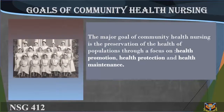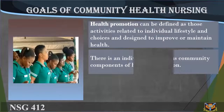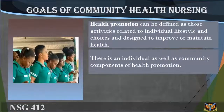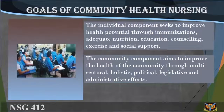The major goal of community health nursing is the preservation of the health of populations through a focus on health promotion, health protection, and health maintenance. Health promotion is defined as activities related to individual lifestyle and choices, designed to improve or maintain health. There is both an individual and community component. The individual component seeks to improve health potential through immunizations, adequate nutrition, education, counseling, exercise, and social support.